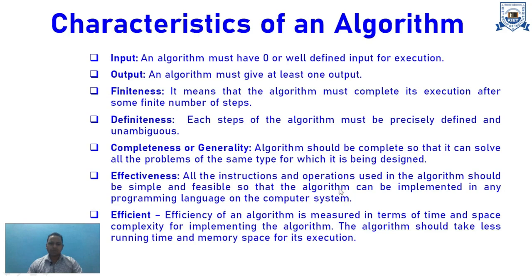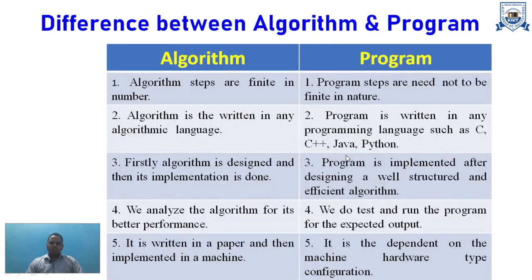A very important question asked in interviews and exams is: what is the difference between an algorithm and a program? For an algorithm, the steps are finite in number — this is a key point. For a program, the steps need not necessarily be finite. An algorithm is written in any algorithmic language, while a program is written in a programming language such as C, C++, Java, or Python.